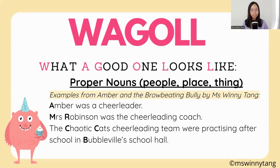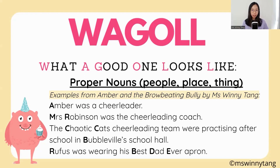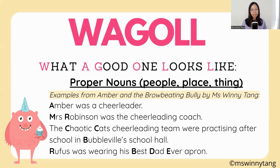'The Chaotic Cats cheerleading team were practicing after school in Bubbleville's school hall.' Chaotic Cats is the name of the cheerleading team, and Bubbleville has a capital B as the name of a place. And then: 'Rufus was wearing his best dad ever apron.' Rufus is a character's name so we've got a capital R, and then we also have the name of his apron, called the Best Dad Ever.